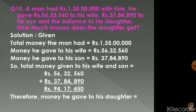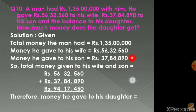Question number 10. A man had rupees 1,35,00,000 with him. He gave rupees 56,32,560 to his wife and rupees 37,84,890 to his son, and the balance to his daughter. How much money does the daughter get? Total money the man had is 1,35,00,000. First, let us find the total amount given to his wife and son.